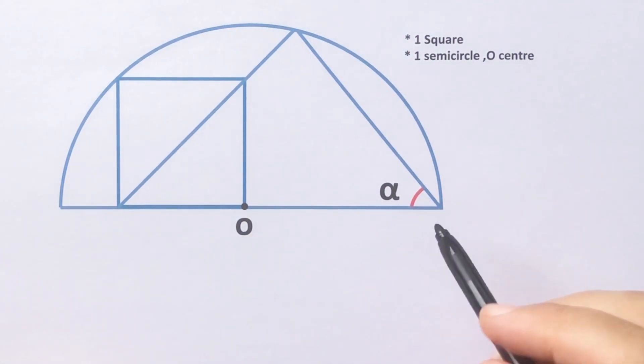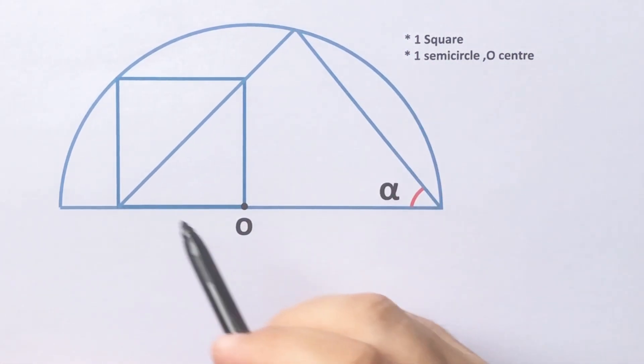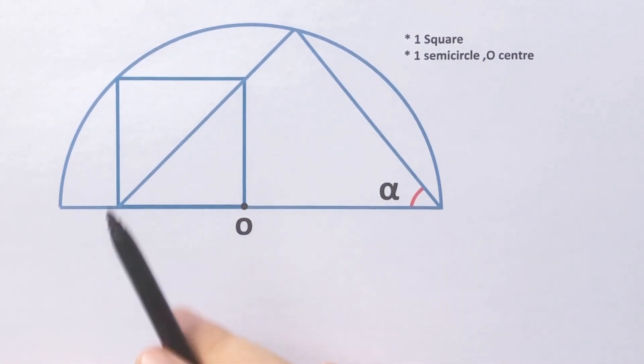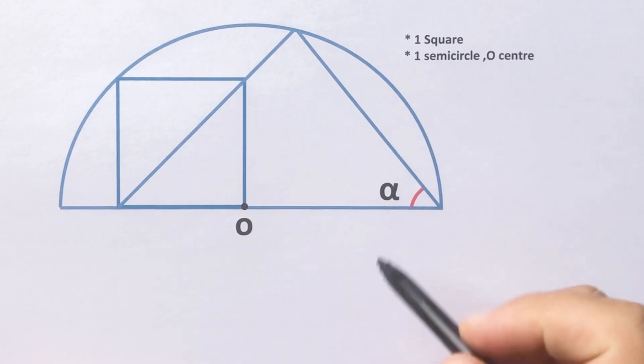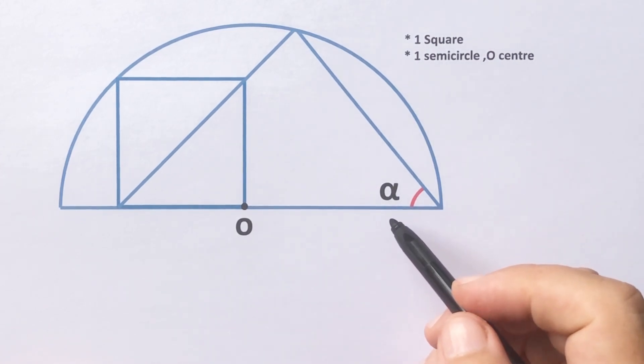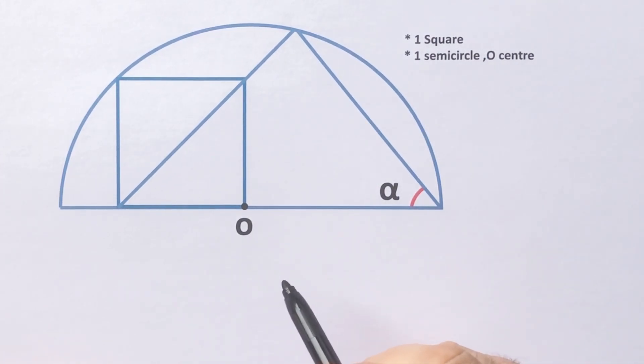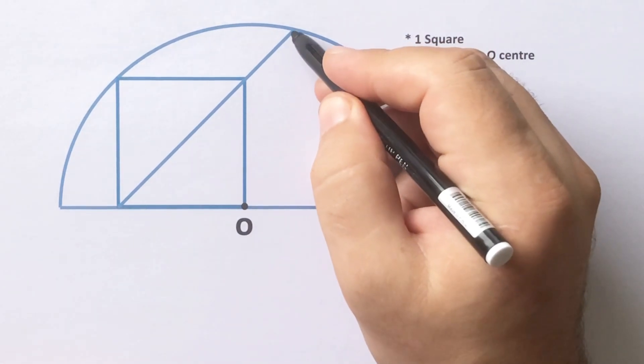Hello everyone, in this video we have one semicircle and one square. O is the center of the semicircle and then alpha is asked. Okay, first step, notice that